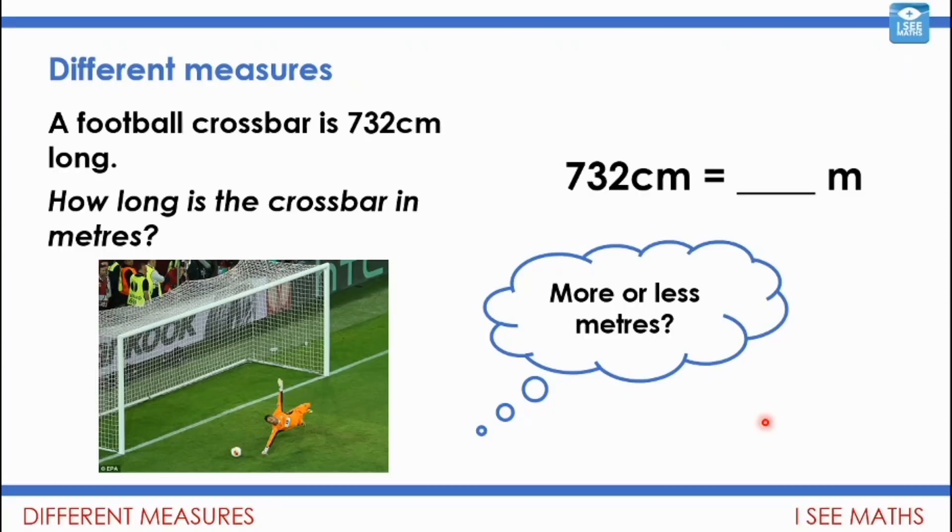And again, have a think about this example. A football crossbar is 732 centimeters long. How long is the crossbar in meters? Again, I'd have to think, is it more than 732 meters or is it less? Is it more or less meters? Now, it will be less. It will be 7.32 meters. It will be a hundred times less.